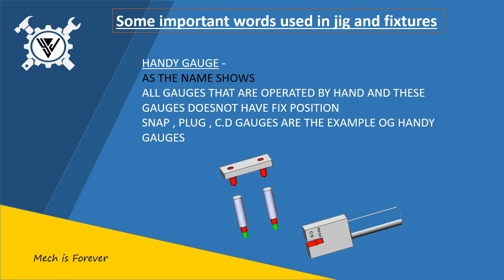Let's move on to another topic: handy gauge. As the name shows, all gauges that are operated by hand, and these gauges do not have a fixed position. Snap, plug, and CD gauges are examples of handy gauges.